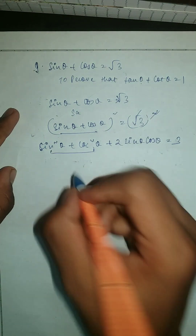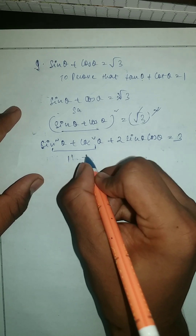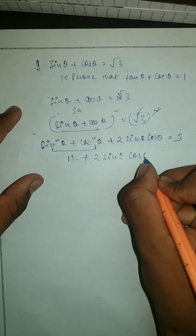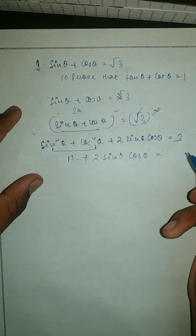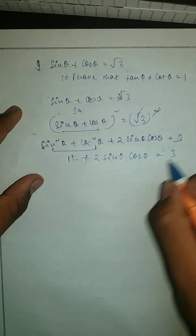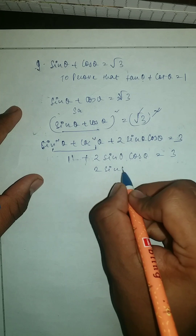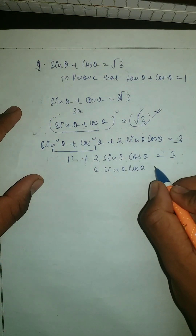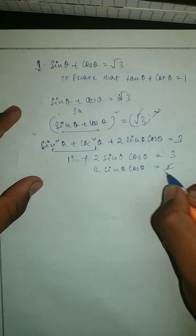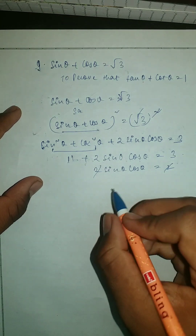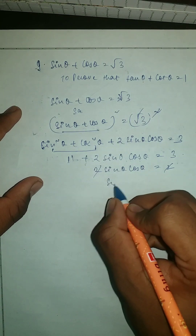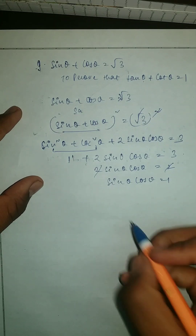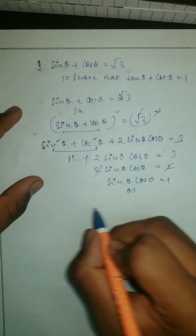Now here we can write this as 1 plus 2 sine theta cos theta is equal to 3, since sin²θ + cos²θ = 1. Taking the terms across, 2 sine theta cos theta equals 3 minus 1, which is 2, and the 2's cancel. So sine theta cos theta is equal to 1.